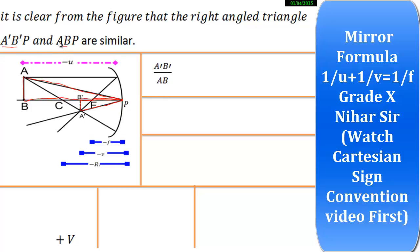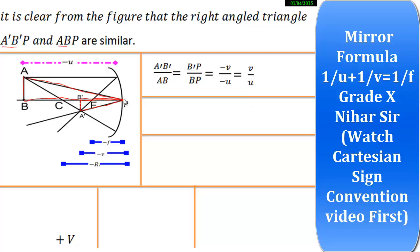Now, PB' is minus v and PB, the object distance, is minus u. So this is PB' over PB, which is minus v over minus u. The minus signs cancel from numerator and denominator. So A'B' upon AB equals v upon u — this is equation number one.